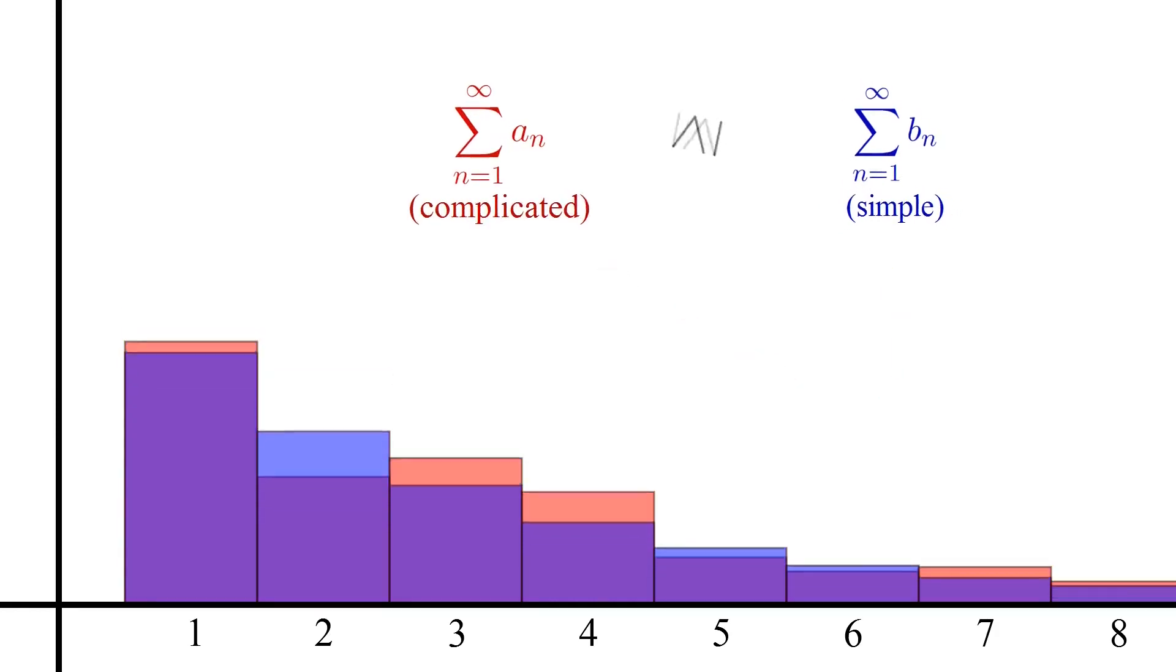And conversely, if the simple b series is divergent and each of its terms b_n is smaller than the respective a_n term in the a series, then the sum of the a series must be bigger than the sum of the b series, which is infinite in this case. Hence the a series must also have an infinite sum, or in other words be divergent.